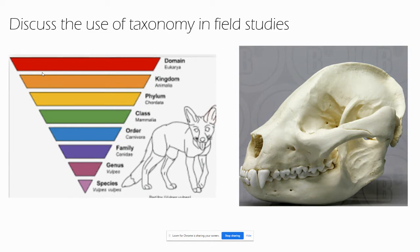This can lead to situations such as in the order Carnivora, where most members have adapted to eat meat and possess carnassial teeth, which are sharp and good at tearing meat. However, there are members of the order Carnivora, such as raccoons and some bears, which are omnivorous but still have these teeth. Then there's the panda, which is classified as Carnivora based on its dentition, but is actually an herbivore in real life. So Carnivora doesn't necessarily mean carnivore.